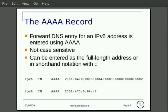The Quad-A record is the forward DNS entry for an IPv6 address in a zone file. It is not case-sensitive and can be entered using the full-length address or in shorthand notation with double colons. At the bottom of this slide, we provide two examples from a BIND zone file using the full-length address or shorthand notation.